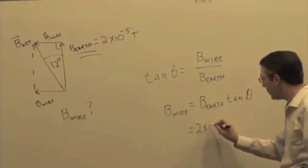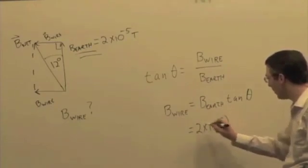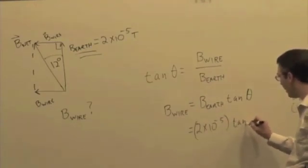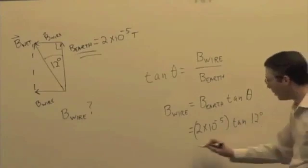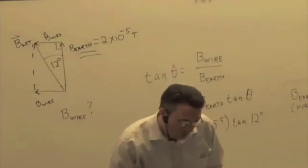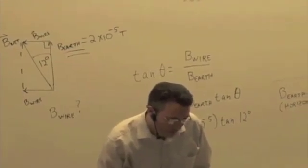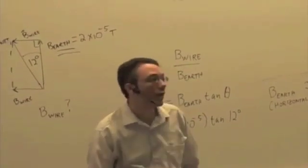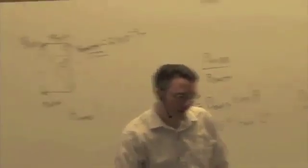So we have 2 times 10 to the minus 5 times the tangent of 12 degrees. What's that give us? 4.3 times 10 to the minus 6.